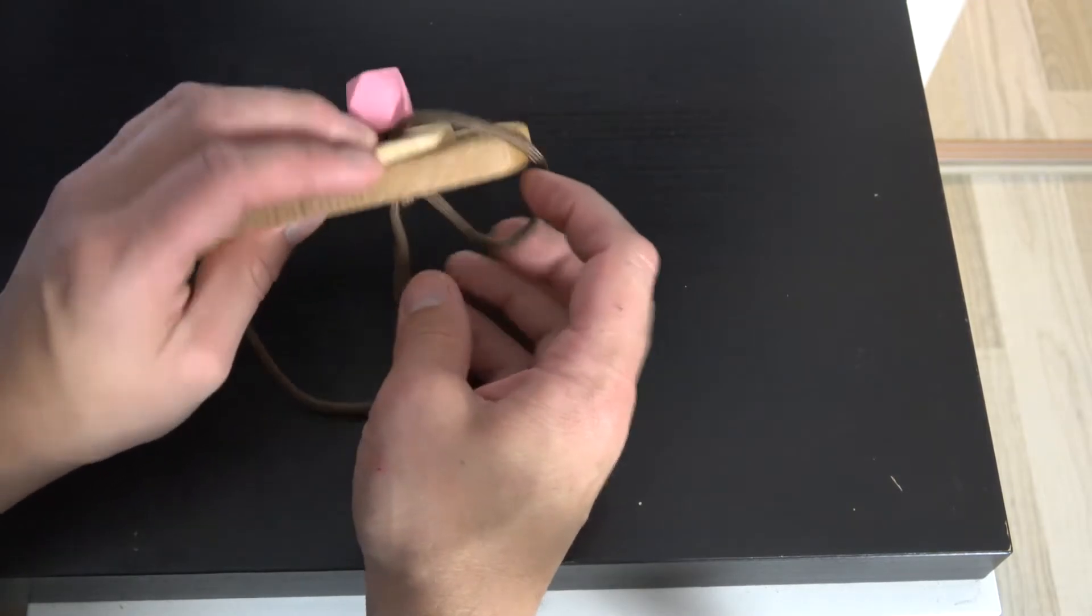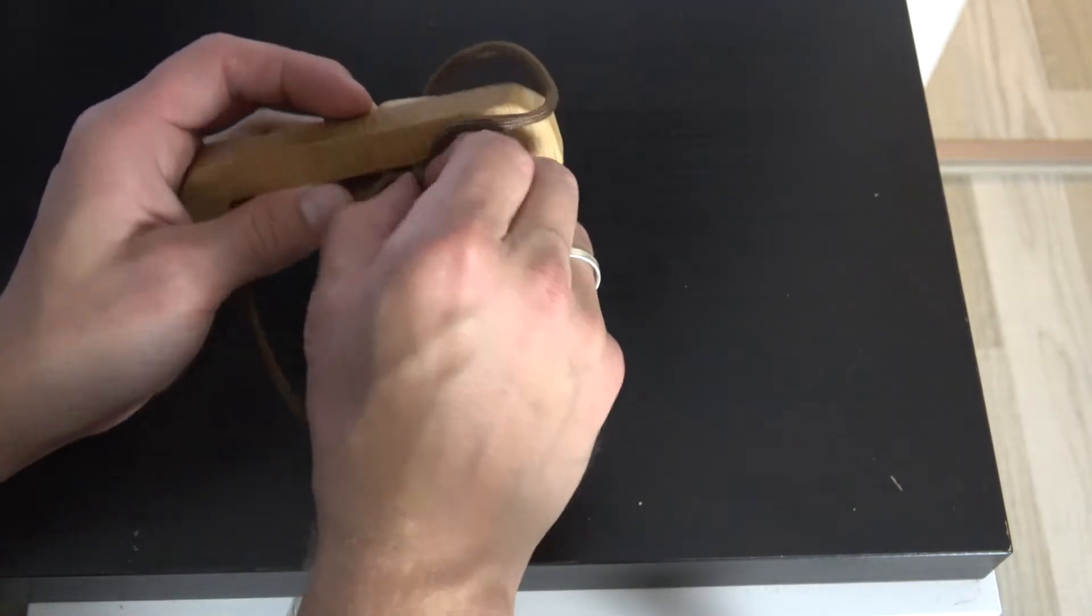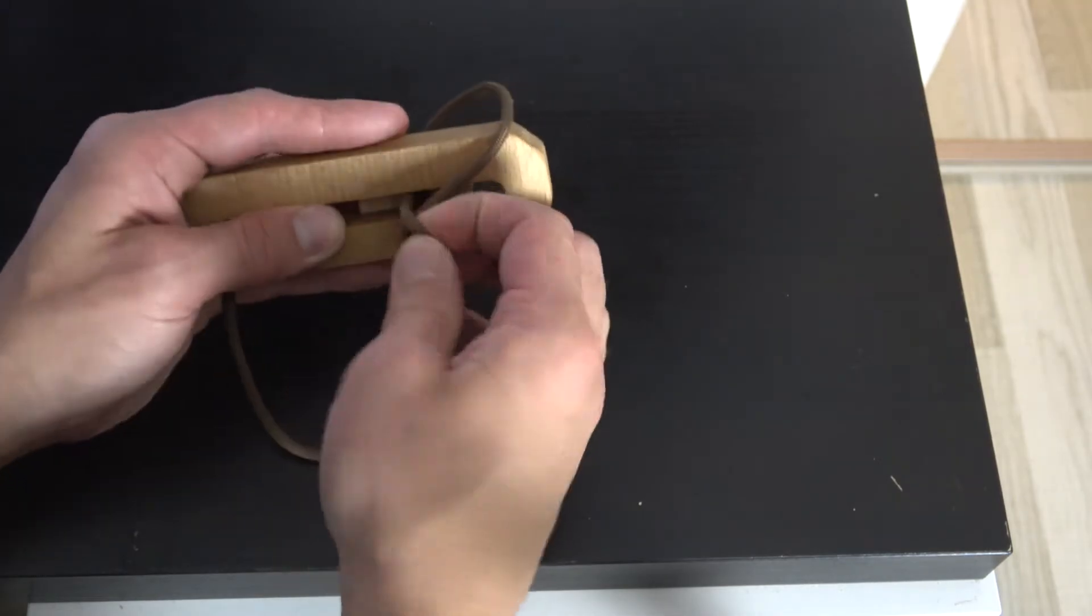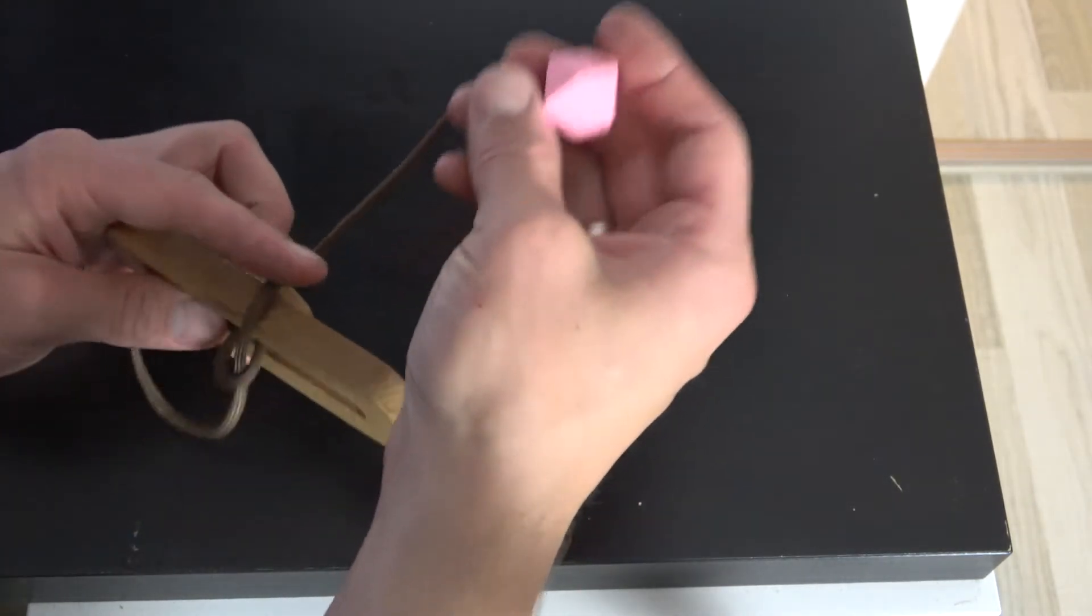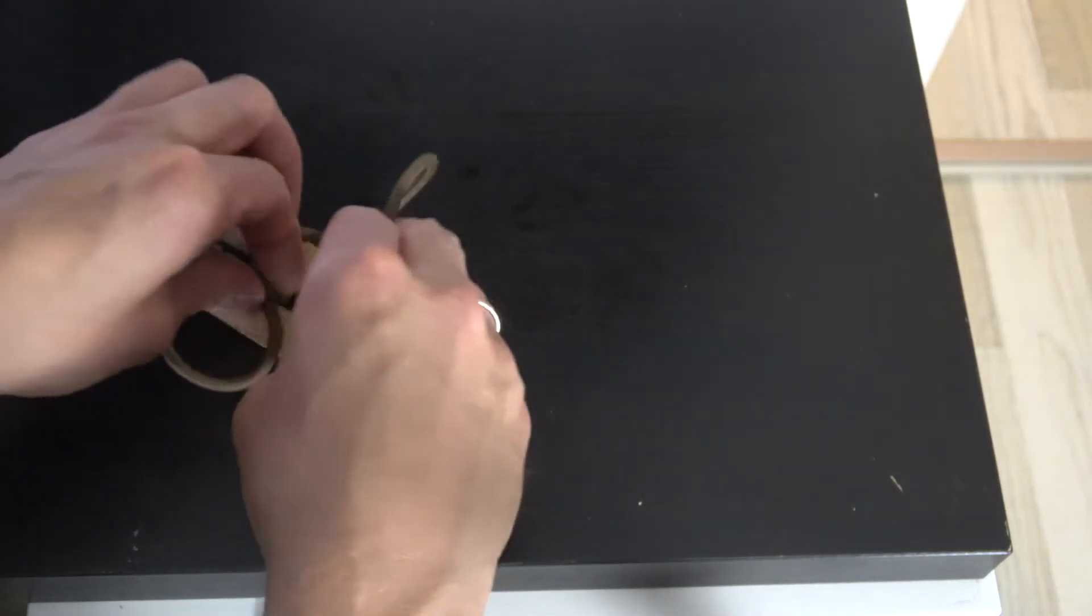Pull as long as this loop gets drawn in from the other side. Now all that's left to do is to take the bead and pull it through this loop.